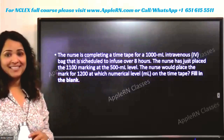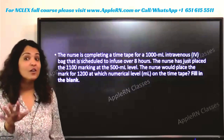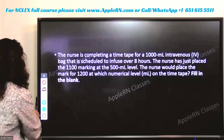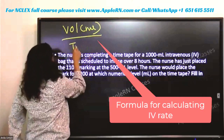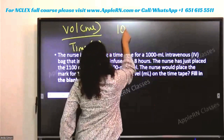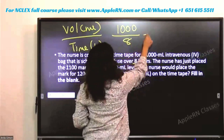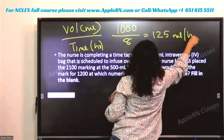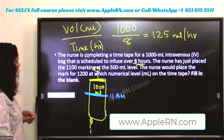First we need to figure out the milliliter per hour — the rate. The rate is not our final answer, but we need it to get there. Rate is calculated as volume in ml divided by time in hours. Volume is 1000 ml, time is 8 hours, so 1000 divided by 8 equals 125. So the rate is 125 ml per hour.